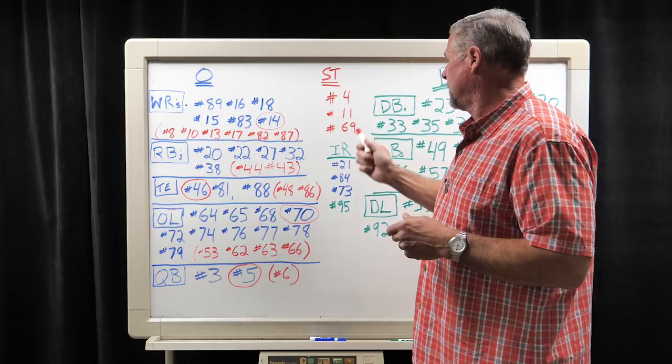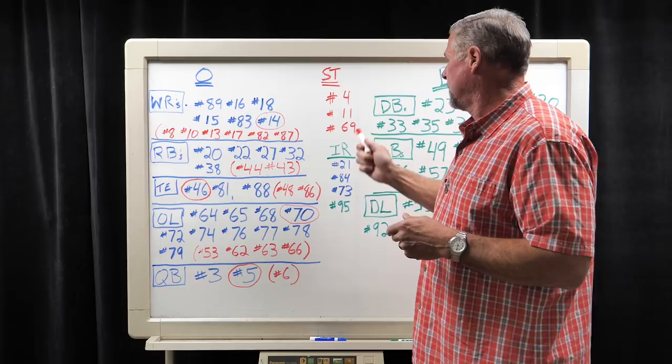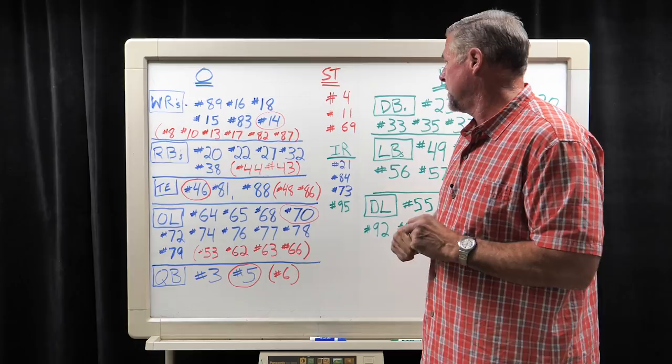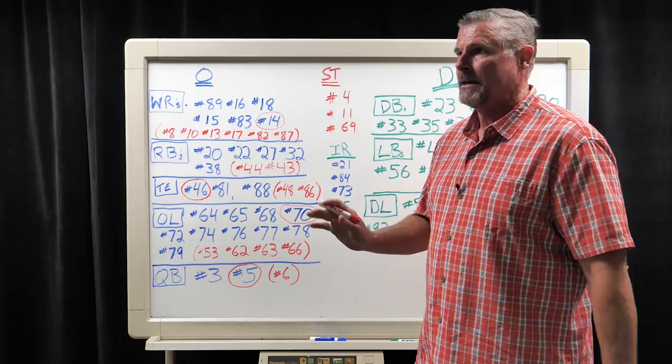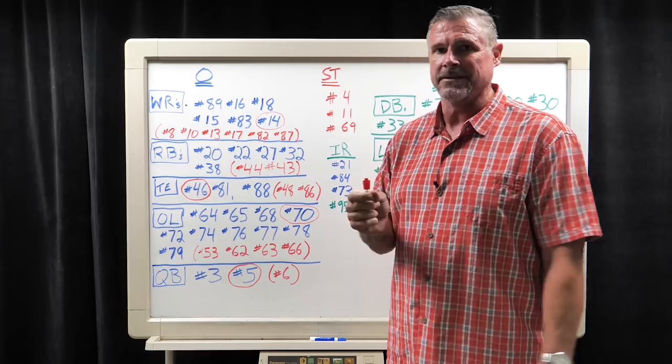First of all, the long snapper, Tyler Ott, who is a Harbor guy. Didn't know that. He's in his fourth year, and has not had a single blown snap all preseason. He's one of those guys that you just don't notice him, and that's how you want your long snapper.